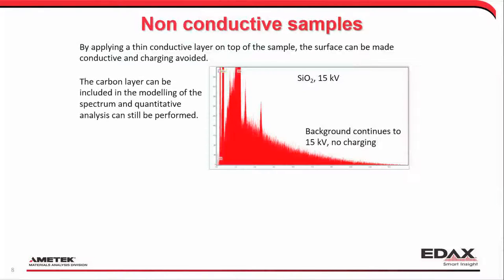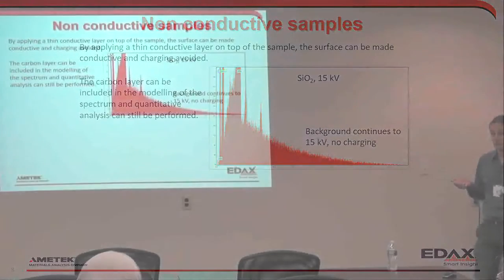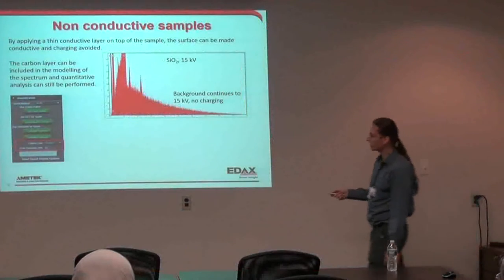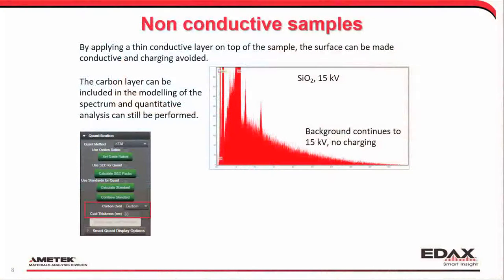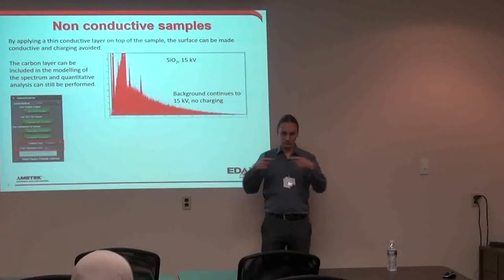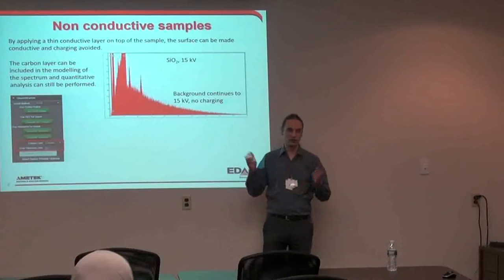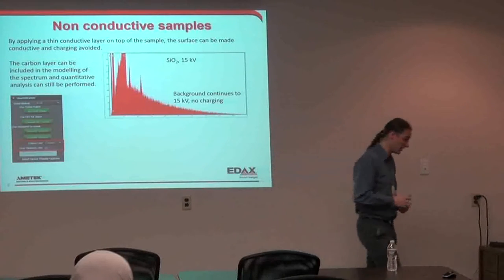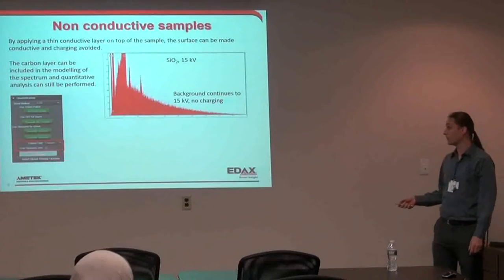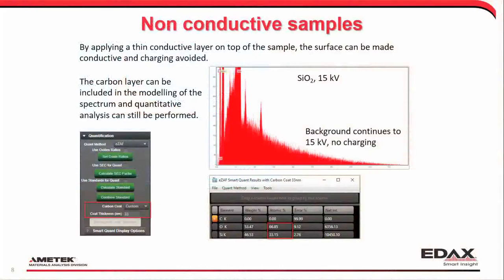Carbon layers are easy to calculate — we can include them in the modeling of the spectrum and still perform quantitative analysis. In the TEAM software, there's a button for carbon coating where you can enter the exact thickness if you know it. This depends on your coater. If you have a quartz crystal monitor, you can measure and enter the exact value. We can take that into account and perform quant analysis — this comes out quite nicely as SiO₂.